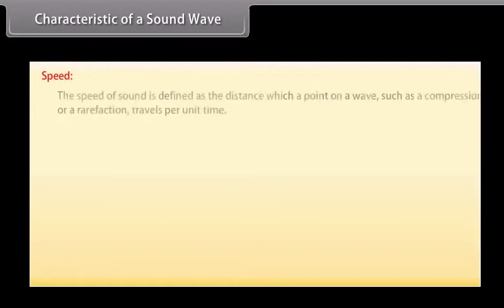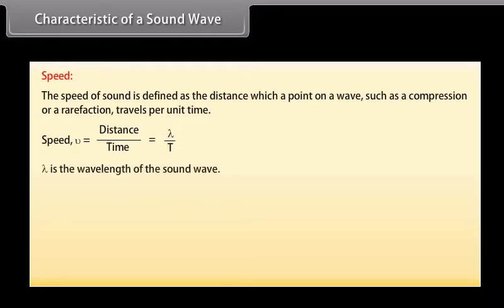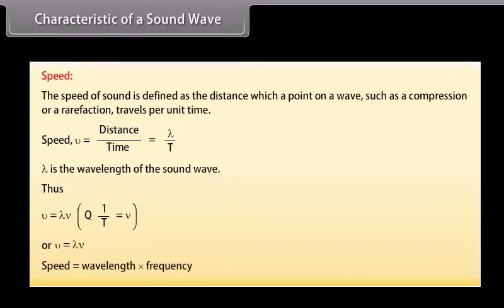Speed. The speed of sound is defined as the distance with which a point on a wave, such as a compression or a rarefaction, travels per unit time. We know that speed v is equal to distance upon time, which is equal to lambda upon T. Here lambda is the wavelength of the sound wave. It is the distance travelled by the sound wave in one time period of the wave. Thus v is equal to lambda into nu. That is, speed is equal to wavelength into frequency.